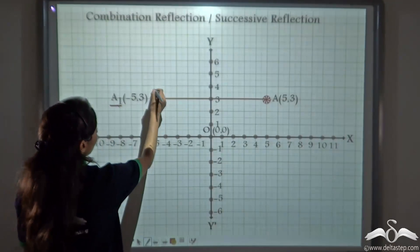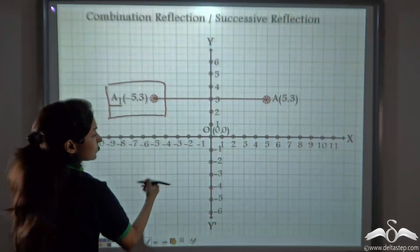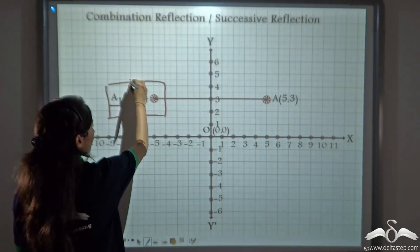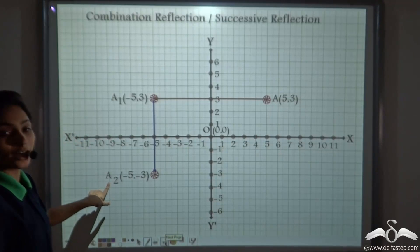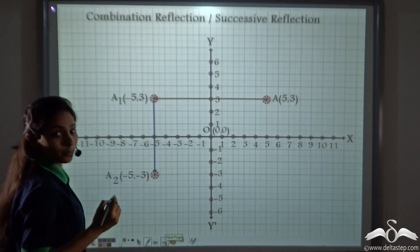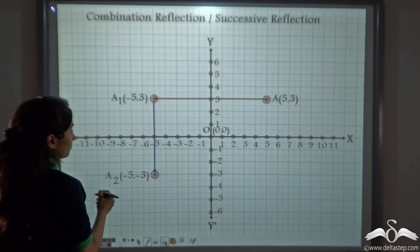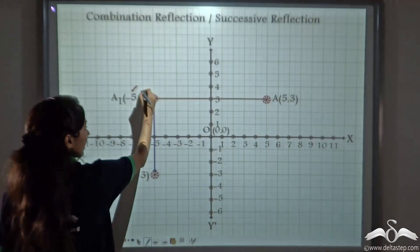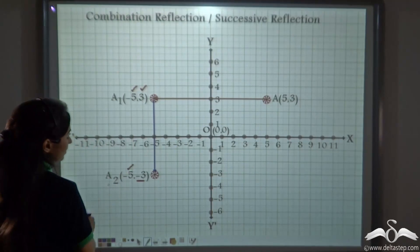Now we will reflect this image on the x-axis. The x-axis will act as the mirror line and we will reflect the image again. We get A2. Whenever we reflect a point about the x-axis, the sign of the y coordinate changes. The x coordinate is the same, and the sign of the y coordinate is changing. So we get this image as A2.